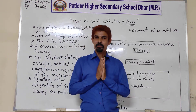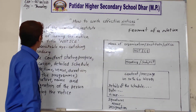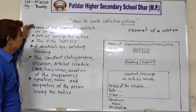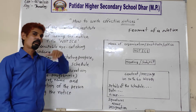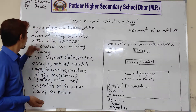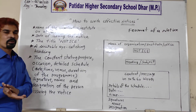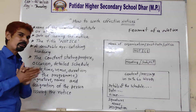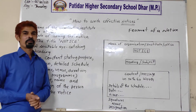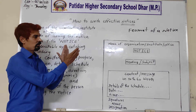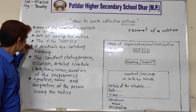Now let's see some points to write an effective notice. First point: the name of the organization, institute, or office — that should be written at the top of the notice. Second point: the date of issuing the notice — जब notice issue कर रहे हैं, वो date हमको लिखनी है. Third: the title of the notice, which should be written in capital letters.